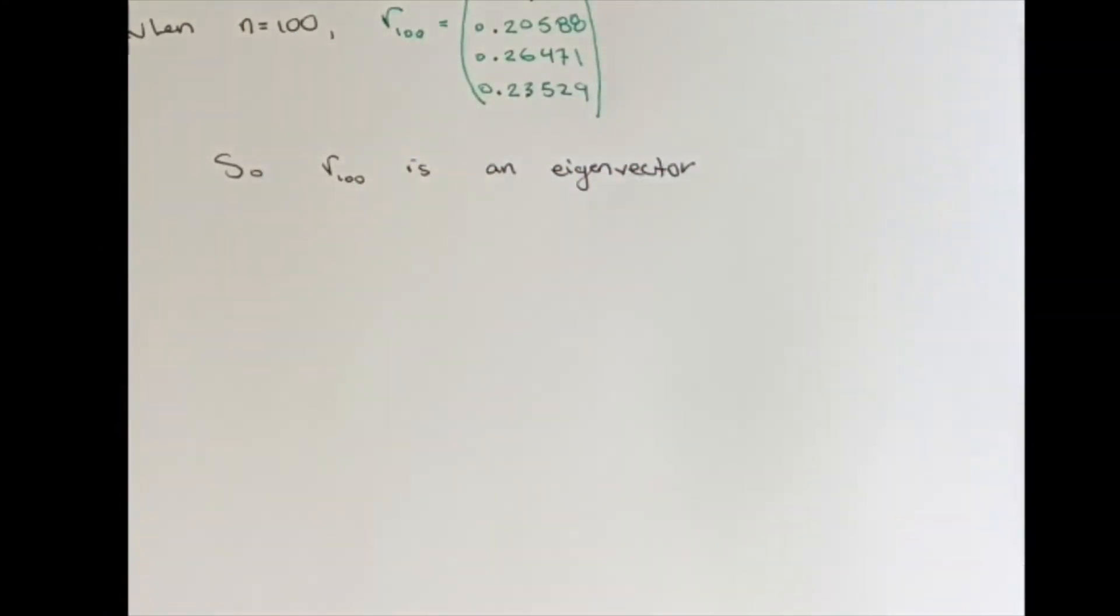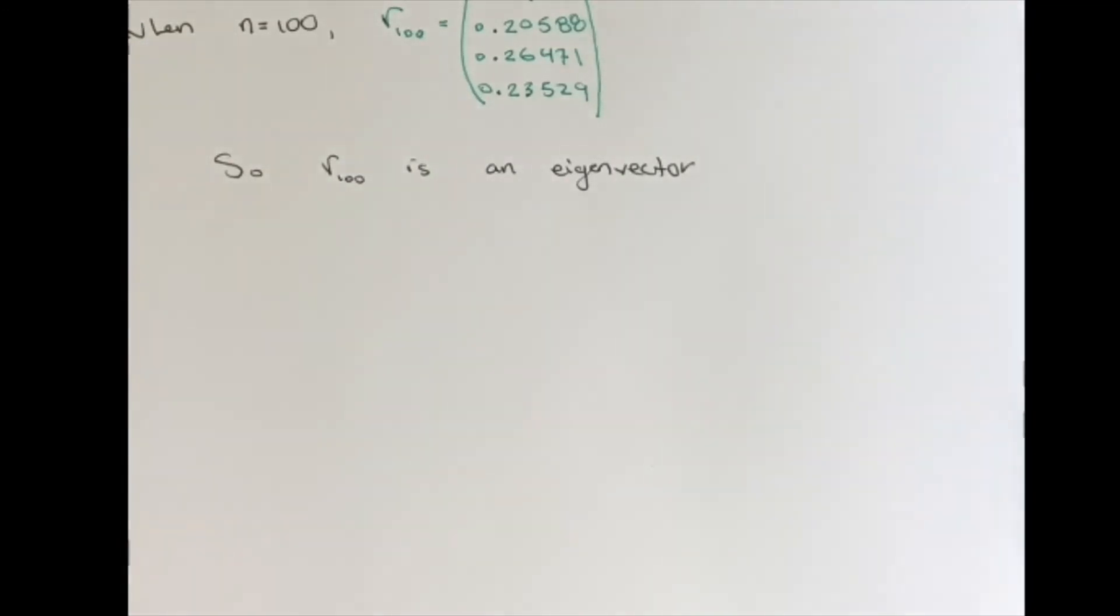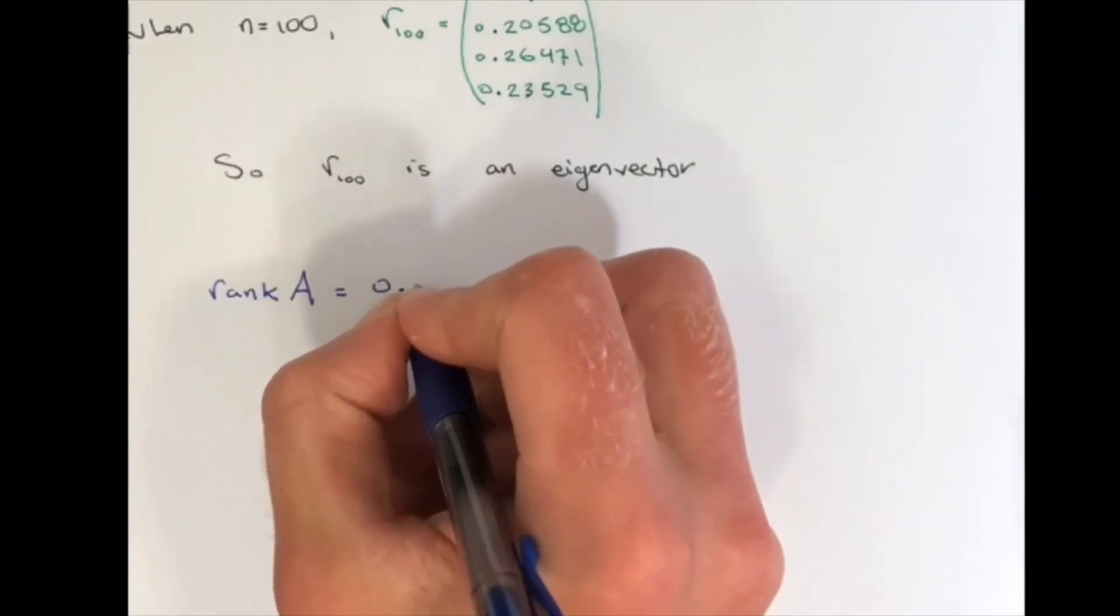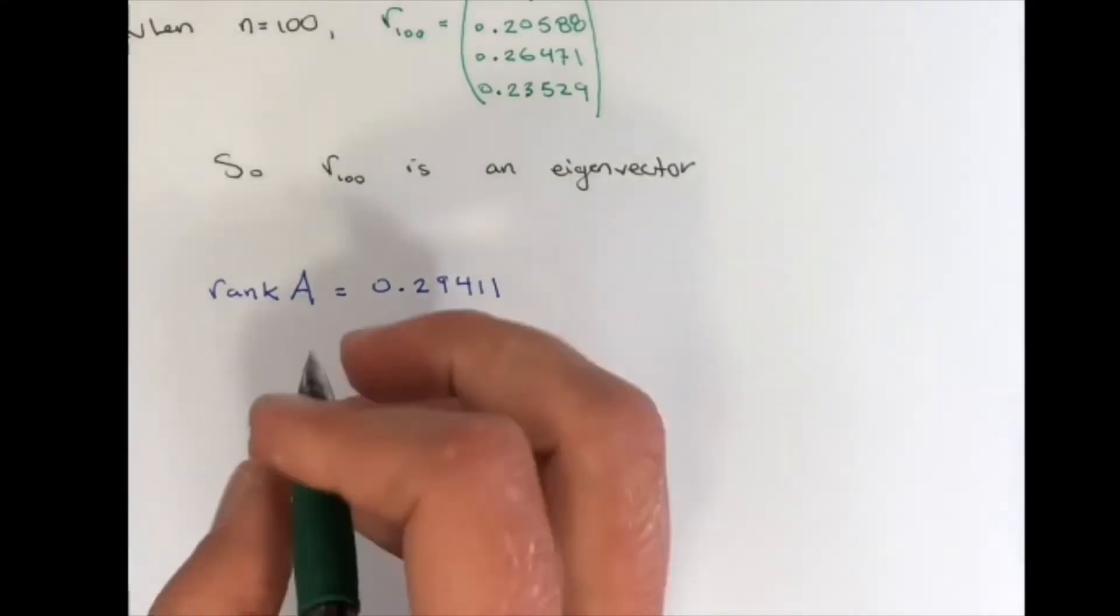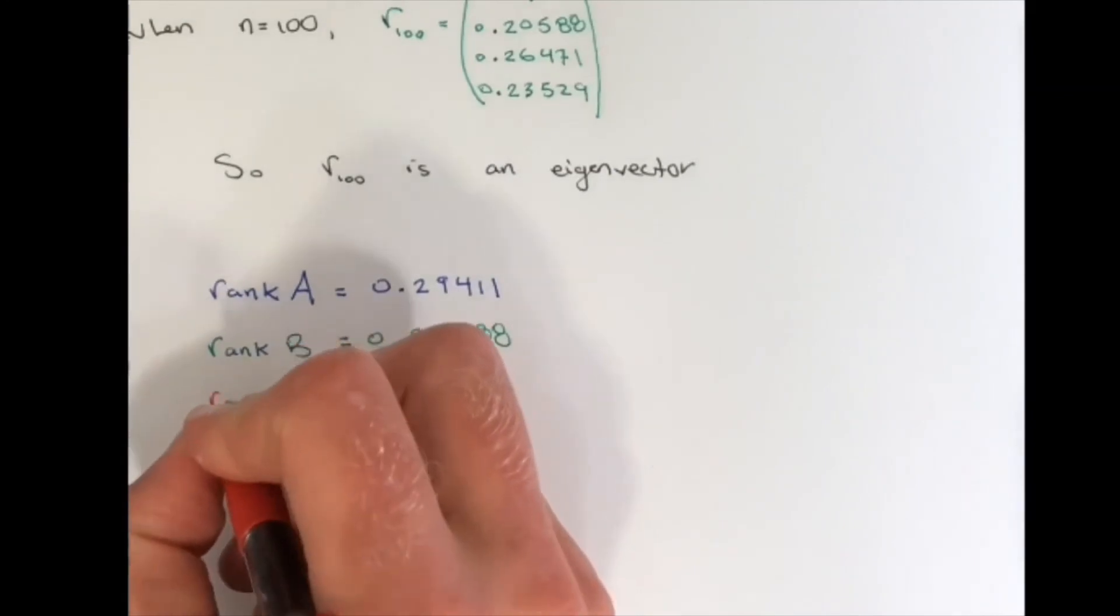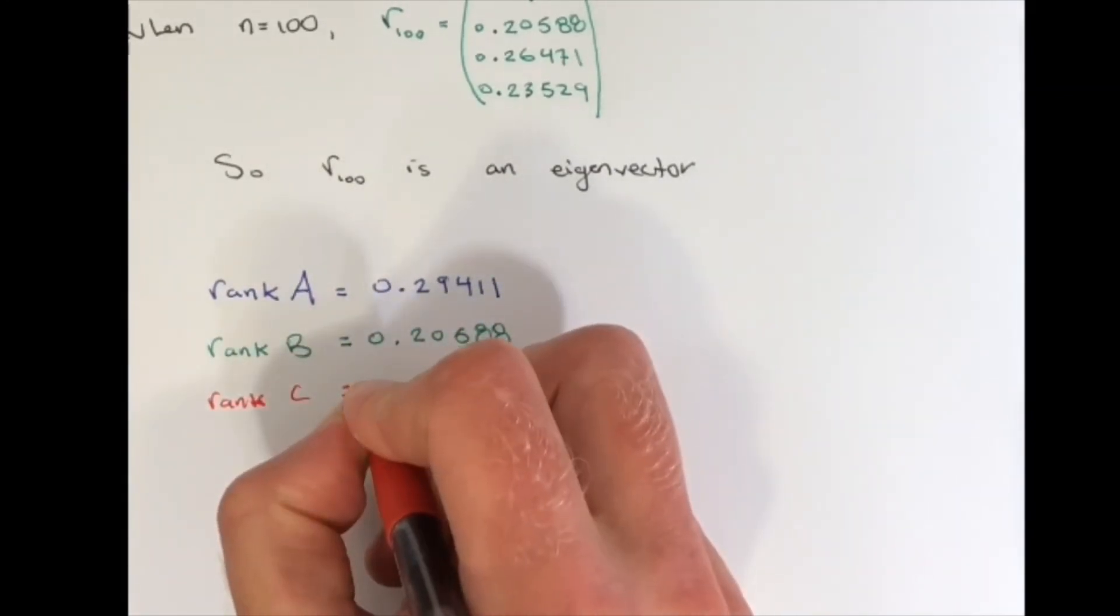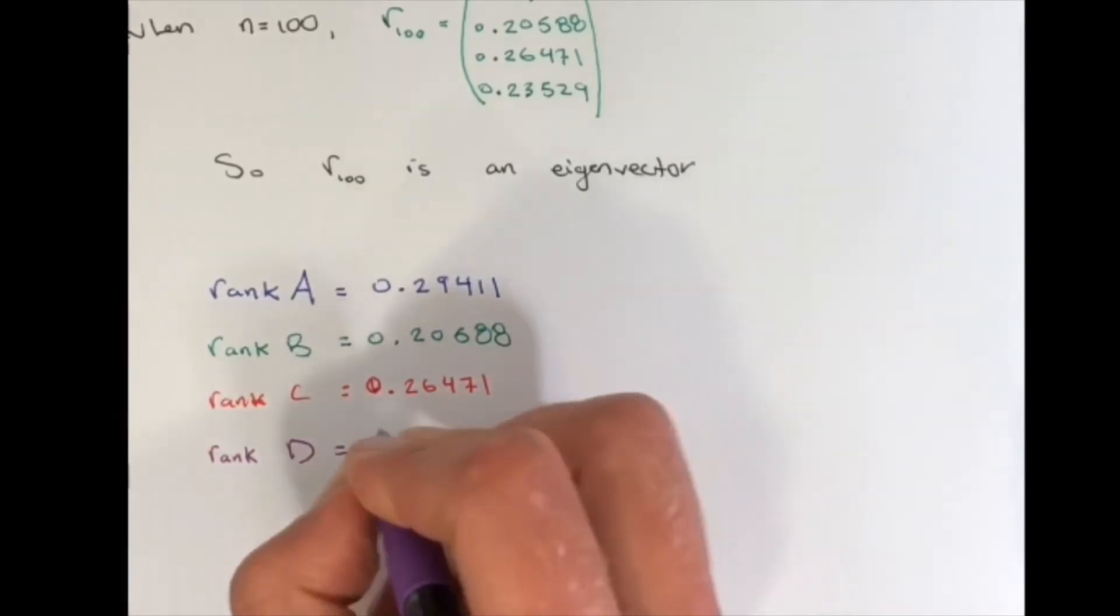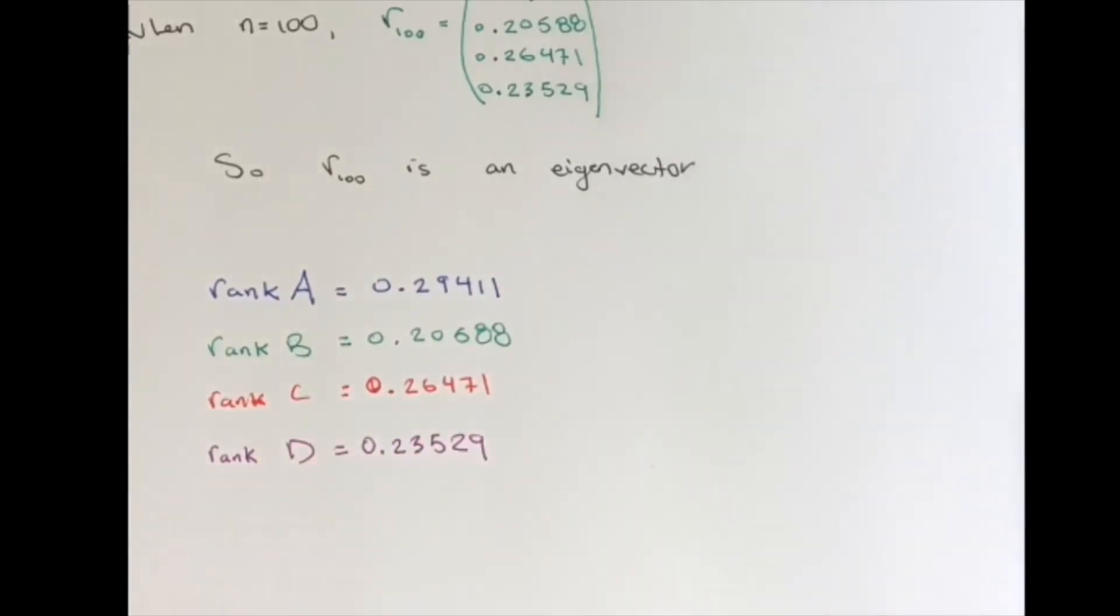This calculation shows us that this R value is an eigenvector. And what does the eigenvector tell us? The entries of the eigenvector tell us the rank of A, the rank of B, which is the second entry, the rank of C, which is the third entry, and the rank of D, which is the fourth entry. We can see that these sum to one, and that's the rank of each website.